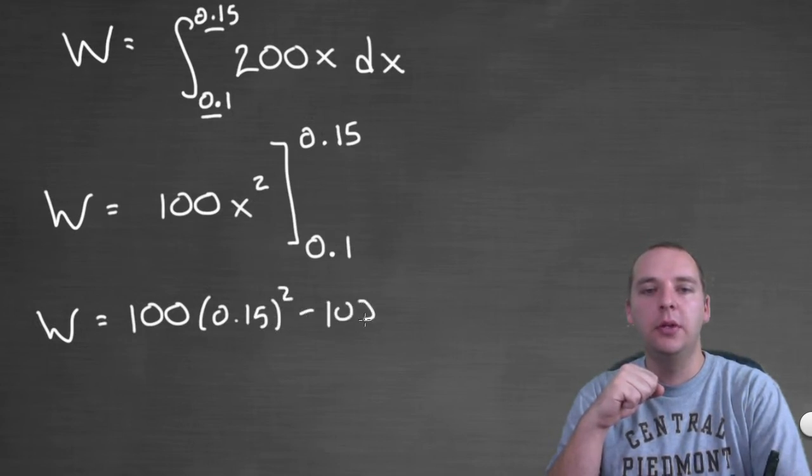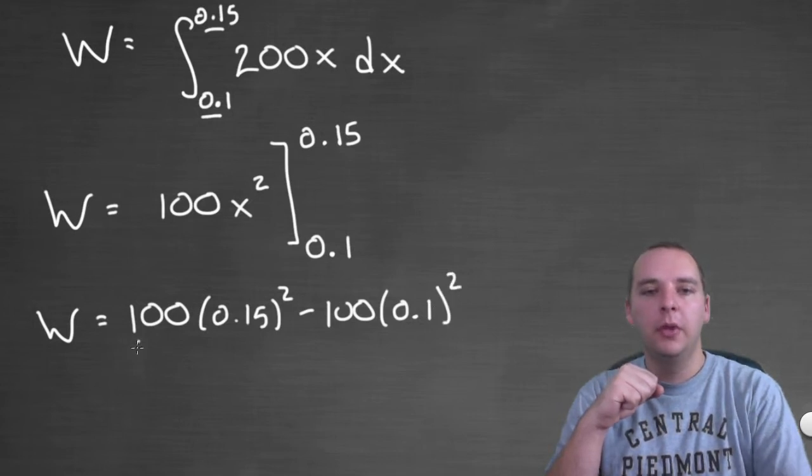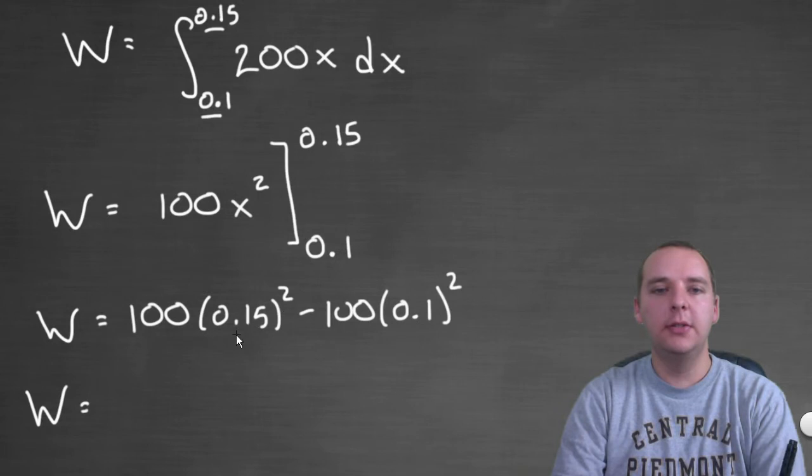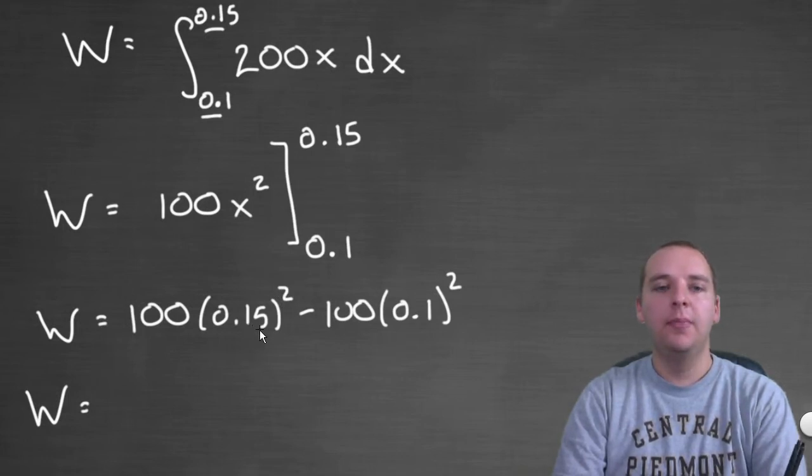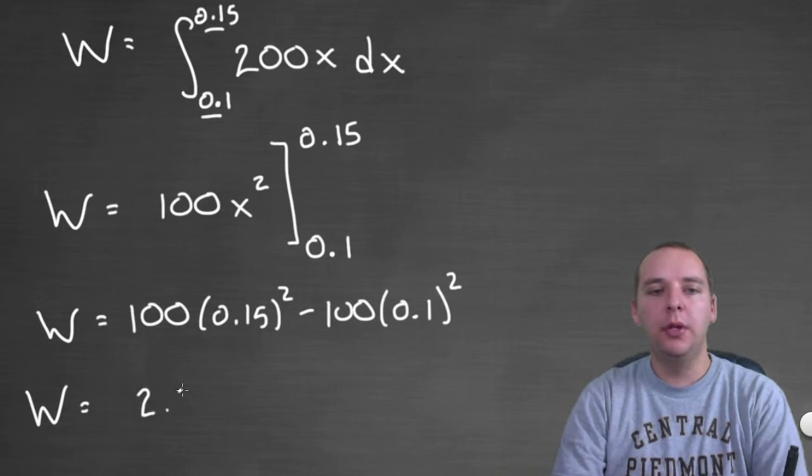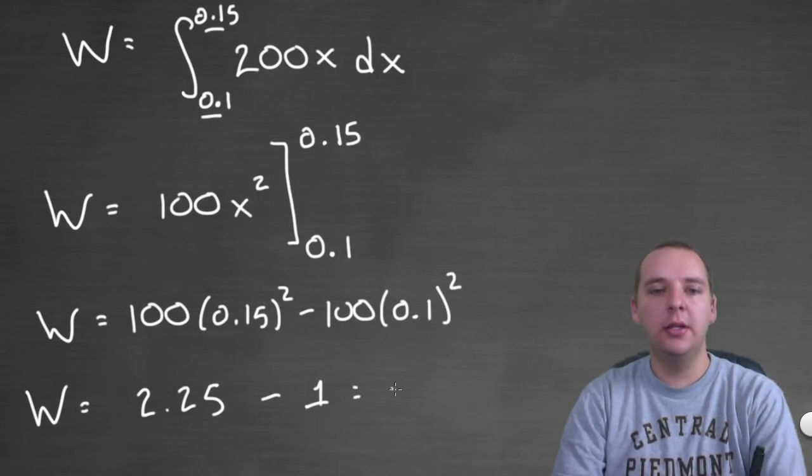So next we would have to evaluate these decimals here, and multiply by 100 and what not. 0.15 quantity squared is 0.0225 times 100 would give you 2.25, 0.1 squared would be 0.01, 0.01 times 100 would be just 1, and so subtract these two quantities, and we would get 1.25.